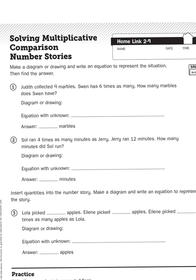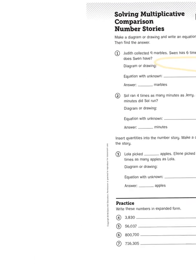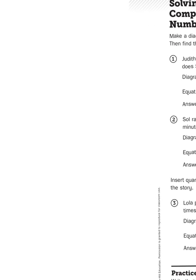Now, I'll be honest with you, this space that they've provided you here, it's not a lot of room for a diagram or a drawing. But in your Homelinks workbooks, you have the back pages of each of the Homelinks, and they're blank, which allows you lots of space for some scratch work. So we're just going to imitate that here. Judith has nine marbles, Swen has six times as many, so basically a diagram could be an array.